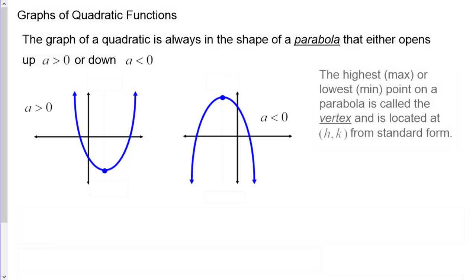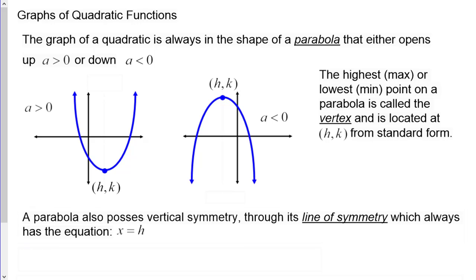The highest or lowest point on the parabola, referred to as a maximum or minimum, is called the vertex and is located at the point (h, k) if the equation is written in standard form. A parabola also has vertical symmetry through its line of symmetry or axis of symmetry, which always has the equation x = h, passing through the vertex.